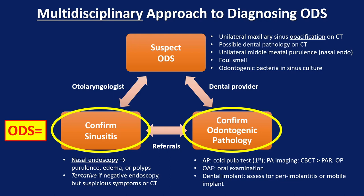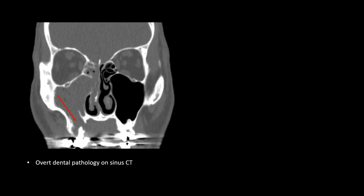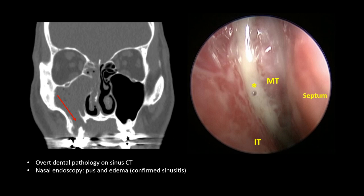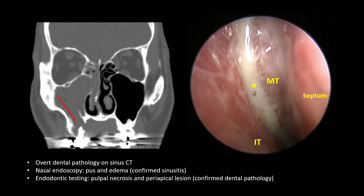Next, we'll utilize this diagnostic framework for some real cases. Here's a patient with right maxillary sinus opacification and overt dental pathology in the form of a periapical abscess with periapical bone erosion. You scope the patient and see florid pus and edema in the middle meatus, confirming sinusitis. You refer the patient to an endodontist who performs cold pulp testing, detects pulpal necrosis, and subsequent imaging shows a periapical lesion — consistent with apical periodontitis, confirming dental pathology. Confirmed sinusitis plus confirmed dental pathology gives you the diagnosis of odontogenic sinusitis.